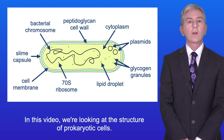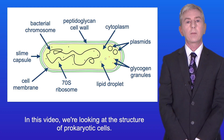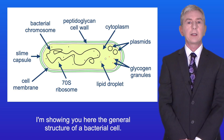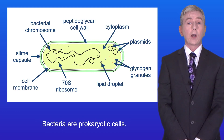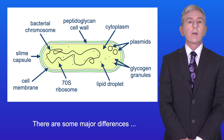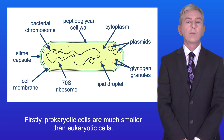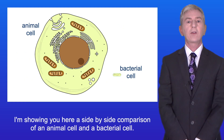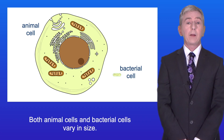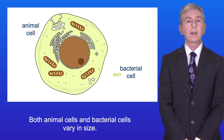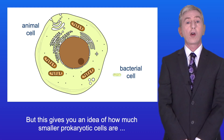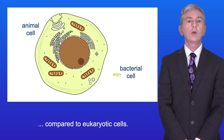In this video we're looking at the structure of prokaryotic cells. I'm showing you here the general structure of a bacterial cell. Bacteria are prokaryotic cells. There are some major differences between prokaryotic cells and eukaryotic cells. Firstly, prokaryotic cells are much smaller than eukaryotic cells. I'm showing you here a side-by-side comparison of an animal cell and a bacterial cell, which gives you an idea of how much smaller prokaryotic cells are.